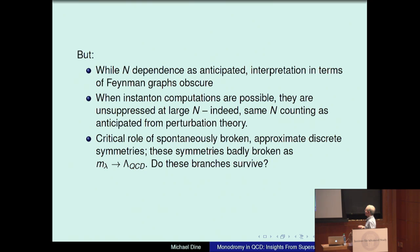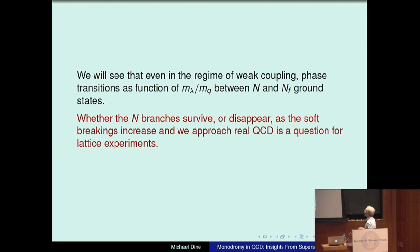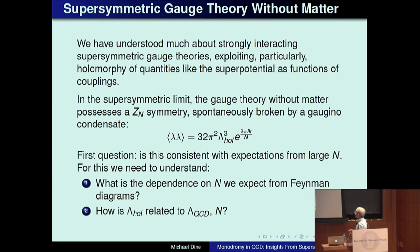The critical role of spontaneously broken approximate discrete symmetries raises the question of what happens as the various soft masses are increased — for example in pure supersymmetric gauge theory as M_lambda goes to infinity, or becomes much larger than lambda QCD. The question arises: do these branches survive? Even in the region of weak coupling, there are phase transitions as functions of the gaugino masses over the quark masses, between N and N_F ground states. Whether the N branches survive or disappear as the soft breakings increase and as we approach real QCD is a question for lattice experiments.